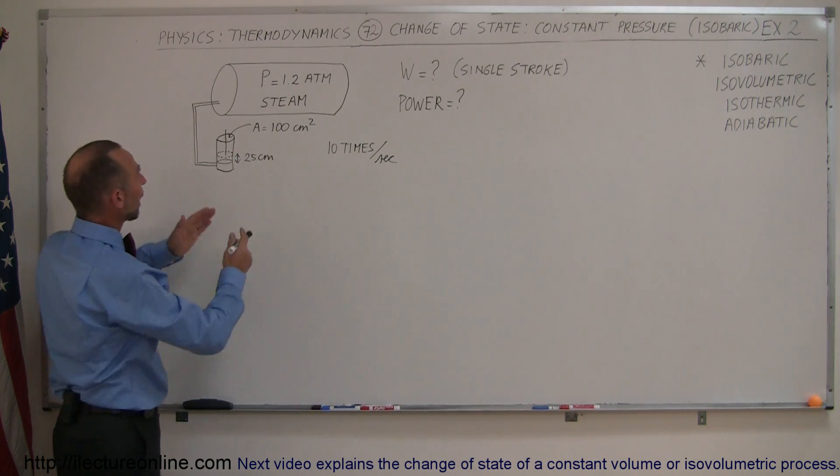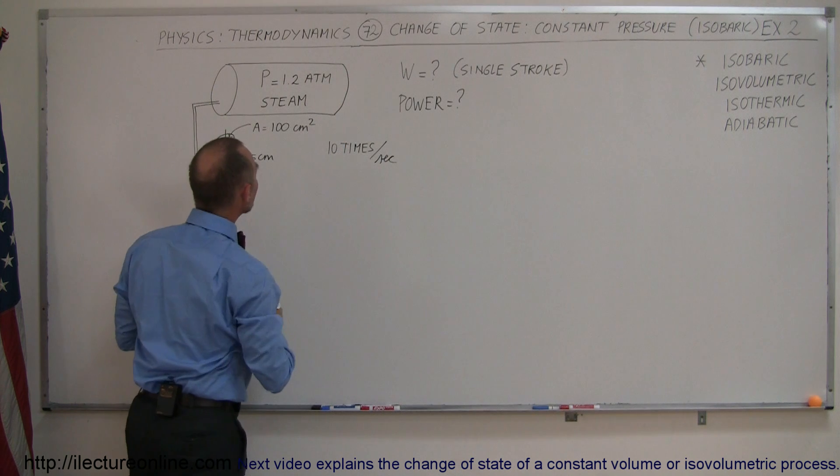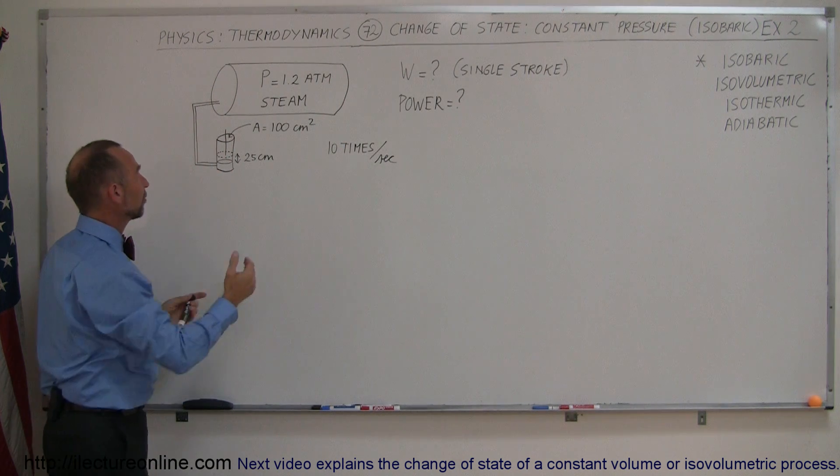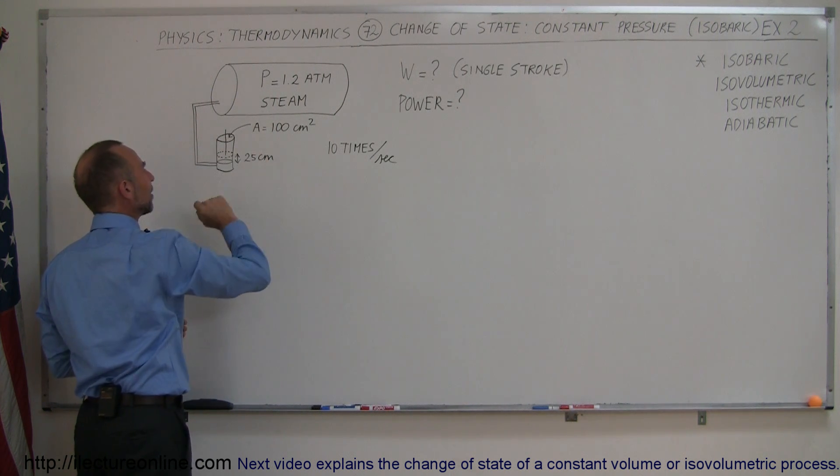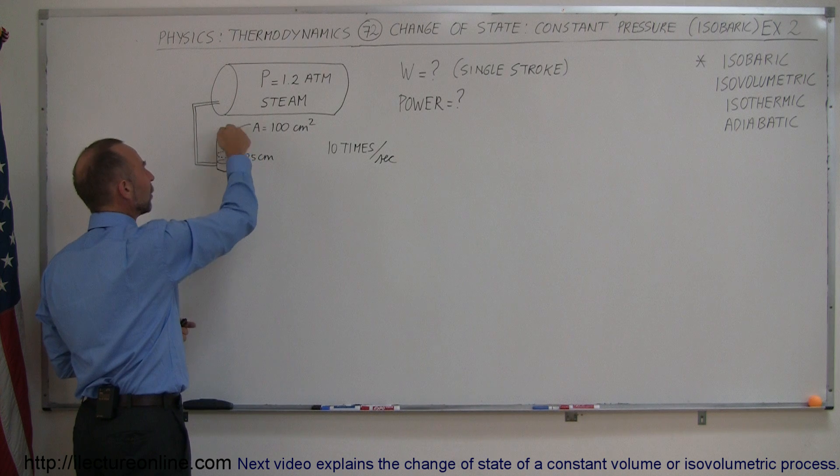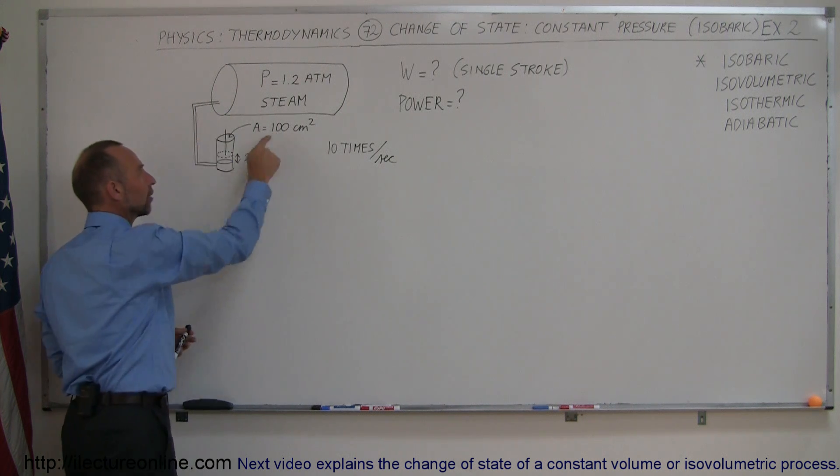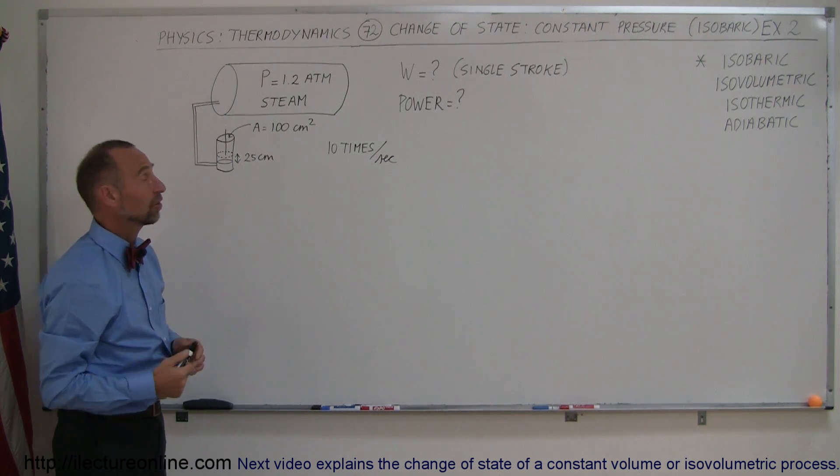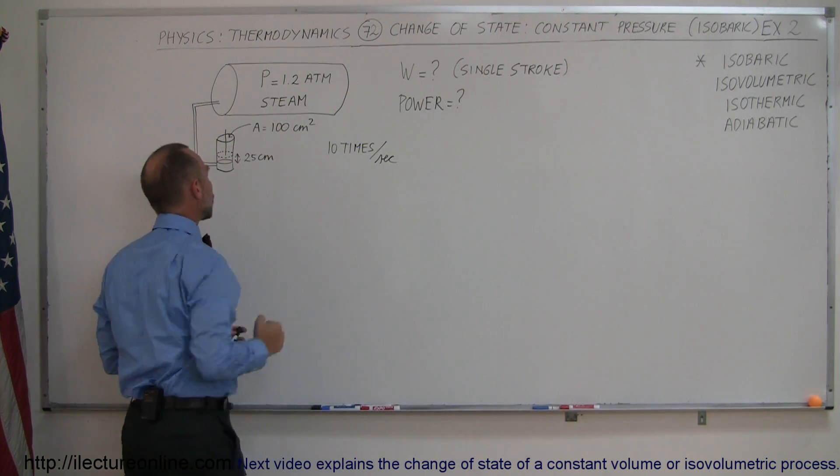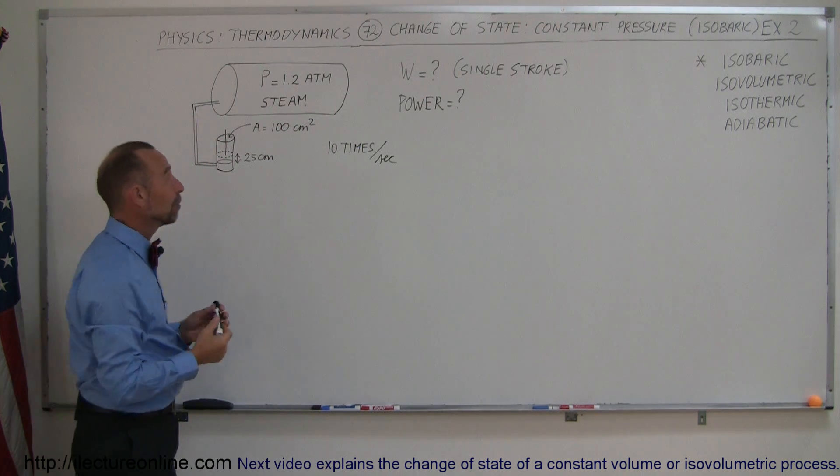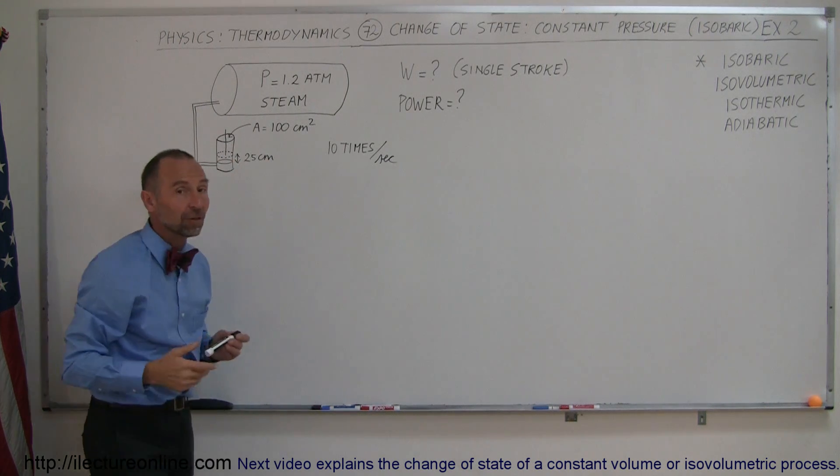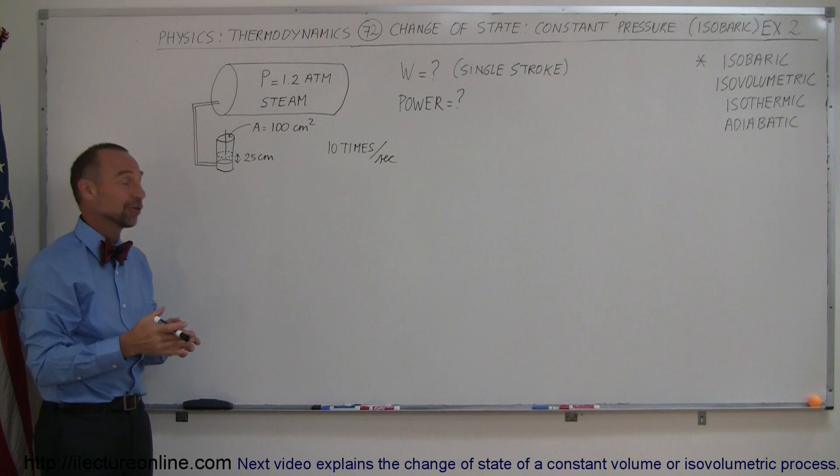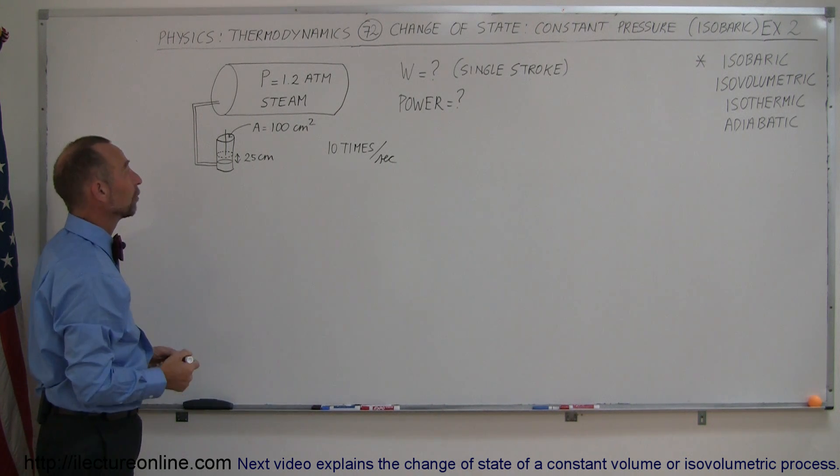And in our example here, we have this big cylinder with hot steam at a pressure of 1.2 atmospheres. It feeds the piston, and so that steam at that pressure causes the piston to rise 25 centimeters in each stroke. The piston has a cross-sectional area of 100 square centimeters. And so the question would be how much work is done by one of those strokes of the piston? And if the piston does this 10 times per second, how much power does this piston put out? And that could be like a simplified version of a piston of a steam locomotive, for example.